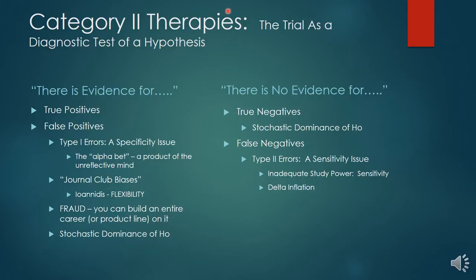When we have formal evidence for a category two therapy, we obtain it by using the trial as a diagnostic test of a hypothesis. Just like any other test with a cutoff — the disease is present or absent, the null hypothesis is confirmed or rejected. If we have a positive trial, we say there is evidence for low tidal volume ventilation, for example. We can be basing that declaration on a true positive study, but we can also have false positive studies.